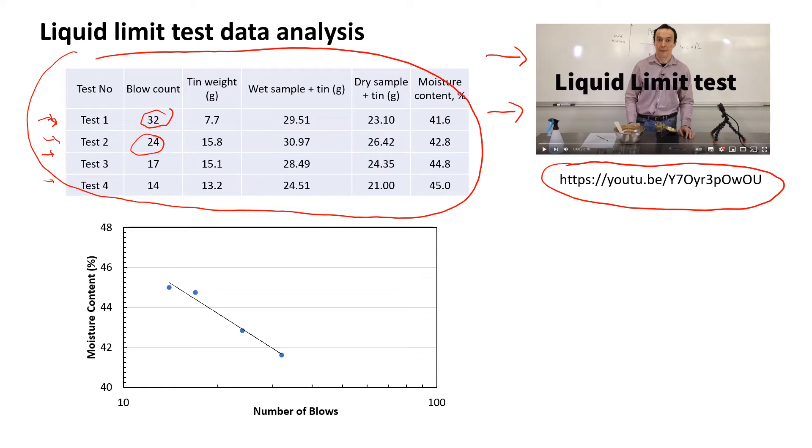We already knew the mass of the tin, so we put soil in the tins. This is the mass for the first one. Then we measured soil when it was moist, it was 29.51. Then we put it in the oven for 24 hours. After that we measured the mass of the tin with the soil and it went down to 23.1 because the soil was dry.